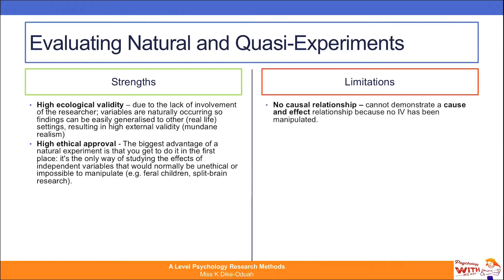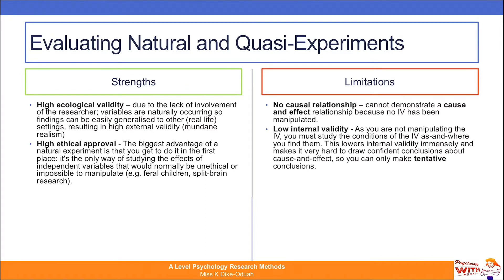On to the limitations. You can't establish any cause and effect — there's no causal relationship in a natural or quasi experiment because the independent variable has not been manipulated. And that is the hallmark quality of an experiment: the researcher manipulates the IV in order to see its effects on the dependent variable. But in both natural and quasi experiments, that is not happening.